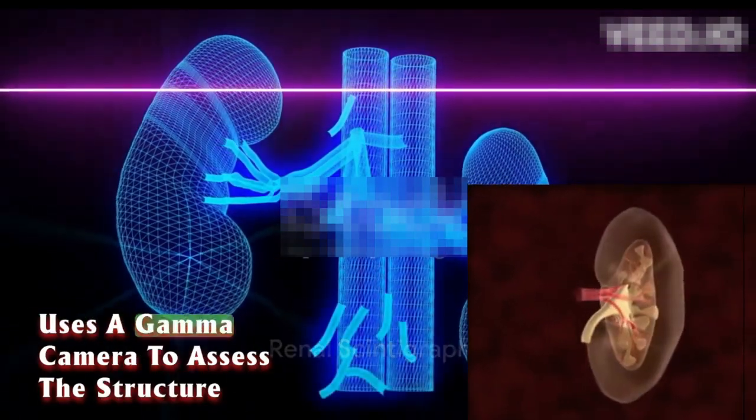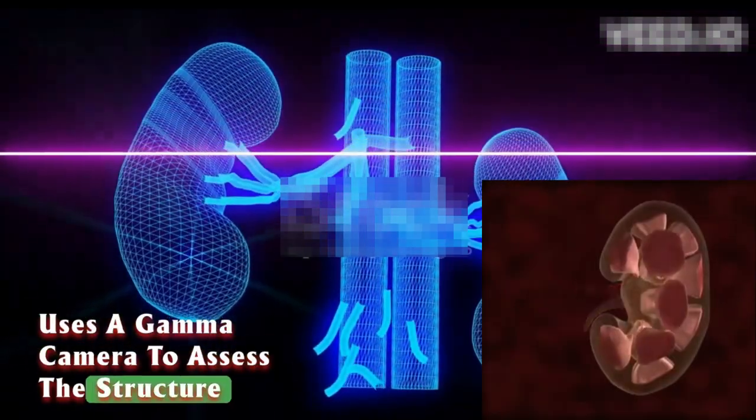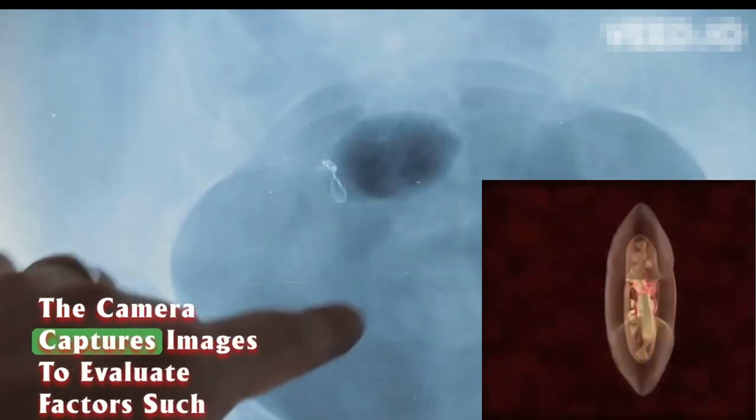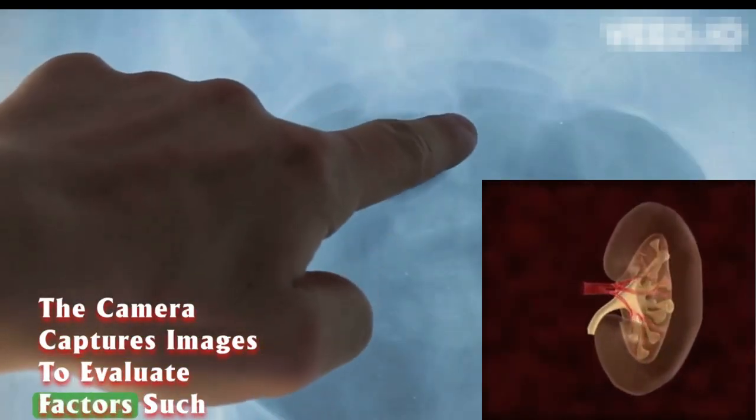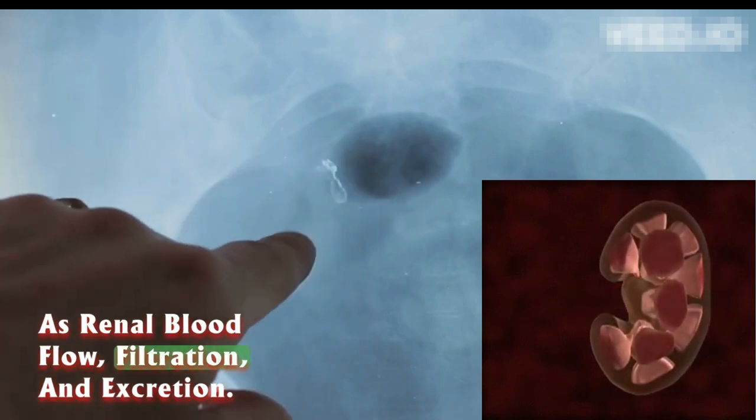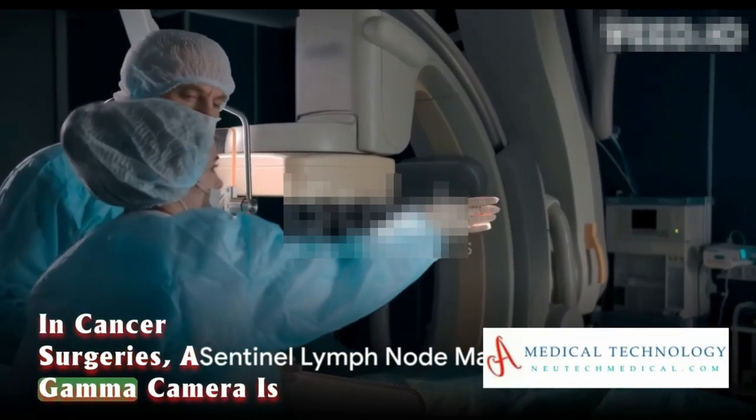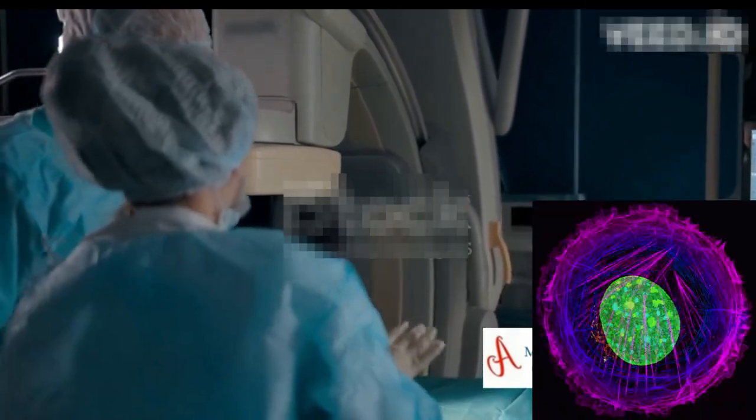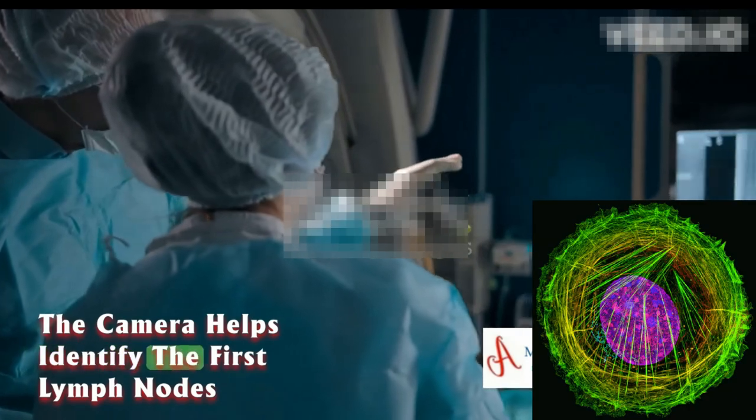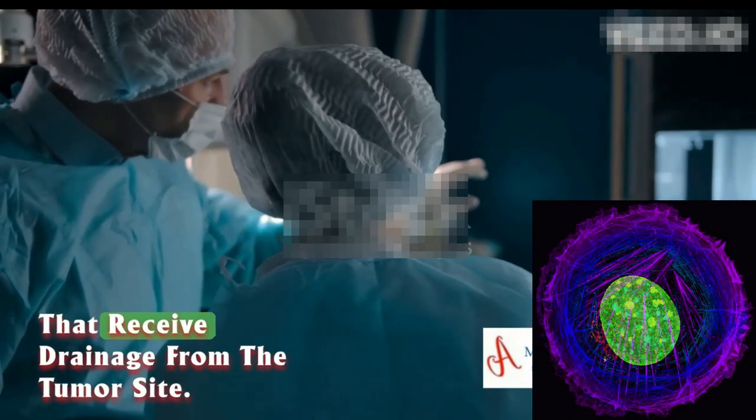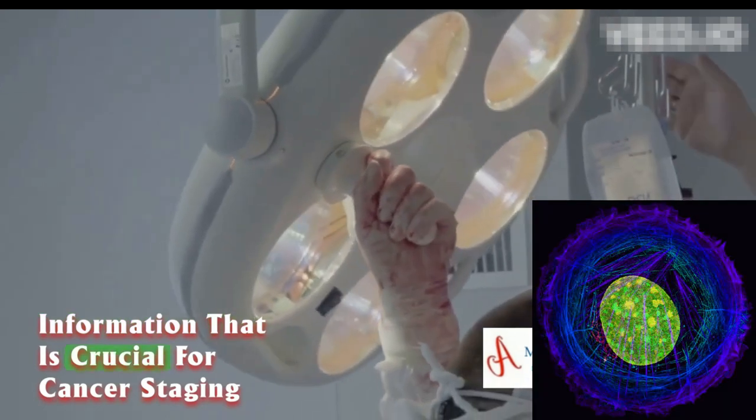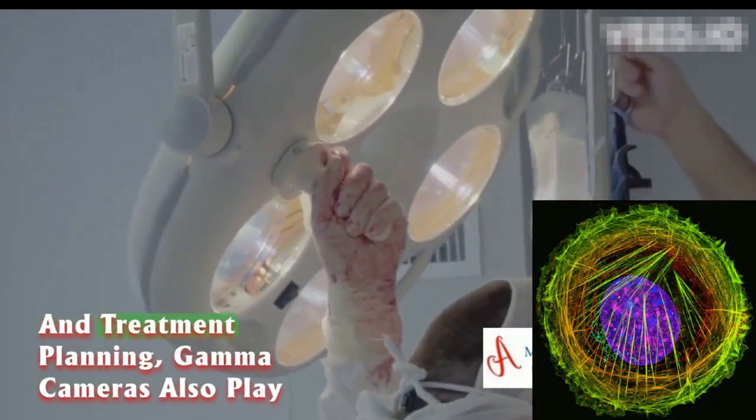For the kidneys, renal scintigraphy uses a gamma camera to assess the structure and function of these vital organs. The camera captures images to evaluate factors such as renal blood flow, filtration, and excretion. In cancer surgeries, gamma cameras are utilized for sentinel lymph node mapping, helping identify the first lymph nodes that receive drainage from the tumor site, crucial information for cancer staging and treatment planning.